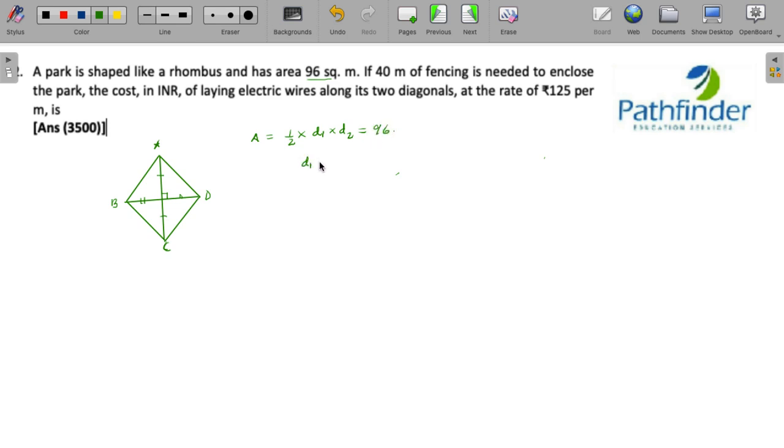This is given to us as 96, so d1 into d2 must be 192 meters. 40 meters of fencing is needed to enclose the park, that means each side must be 10. So if each side is 10...